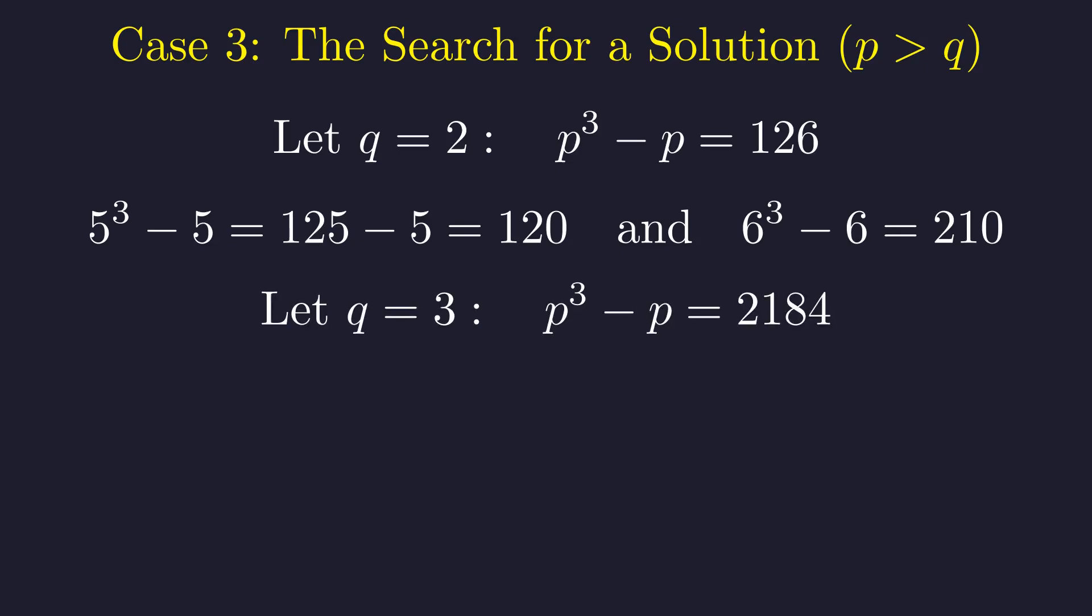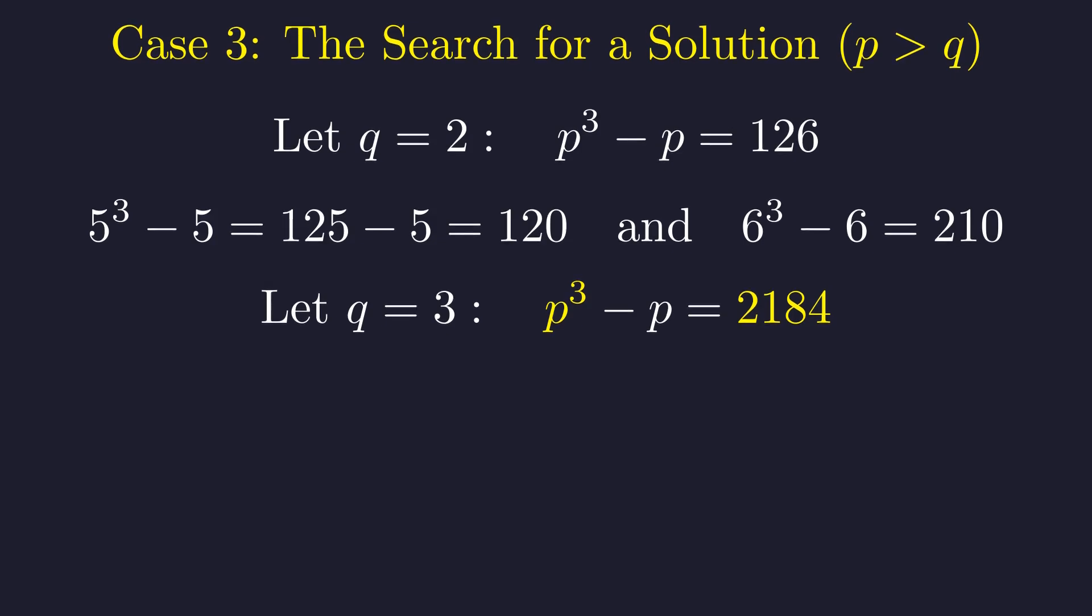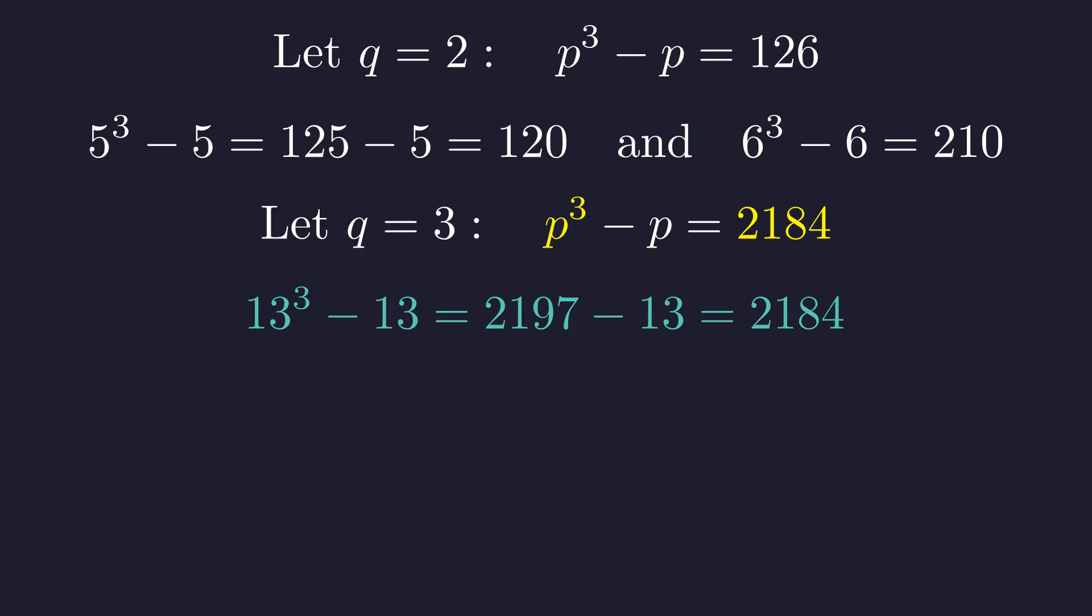Next, we test q equals 3. The right side of the equation evaluates to 2,184. The value of p cubed must be close to 2,184. We can estimate that 13 cubed, which is 2,197, is a promising candidate. Let us test p equals 13. The calculation confirms the equality. Since 13 and 3 are both prime, and 13 is greater than 3, the pair p equals 13, q equals 3 is a valid solution.